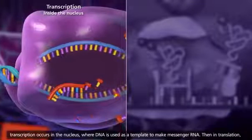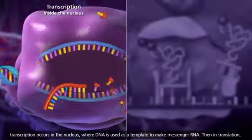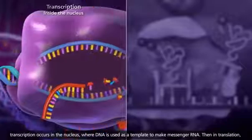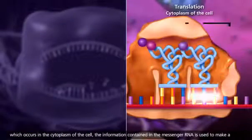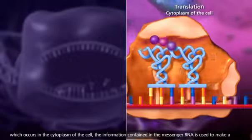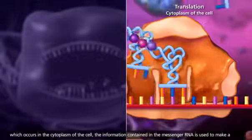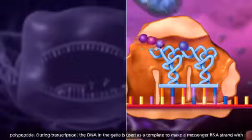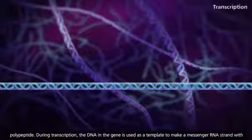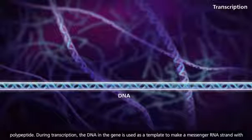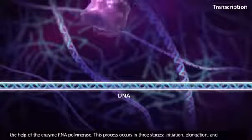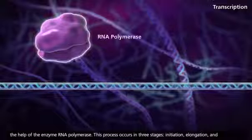In eukaryotic cells, transcription occurs in the nucleus, where DNA is used as a template to make messenger RNA. Then in translation, which occurs in the cytoplasm of the cell, the information contained in the messenger RNA is used to make a polypeptide. During transcription, the DNA in the gene is used as a template to make a messenger RNA strand with the help of the enzyme RNA polymerase.